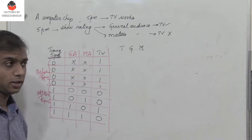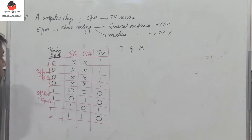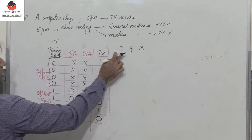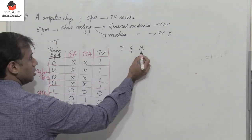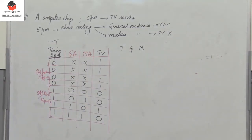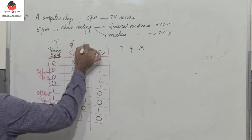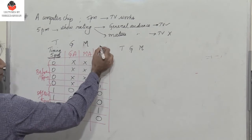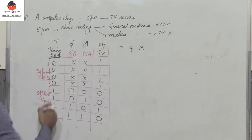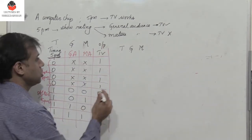This is whether the TV is on or off and we need to get the simplified expression. I have three inputs which indicate the time t, the general audience show g, and the TV show for the mature audience m. So let them be known by t, g, and m.